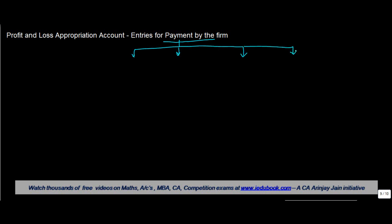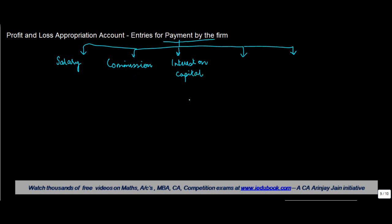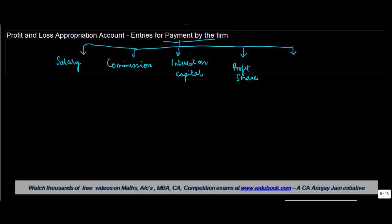The first category could be salary, which the firm may pay to the partner. There could also be some commission. The firm may also pay interest on capital to the partner, and then there is the profit share.